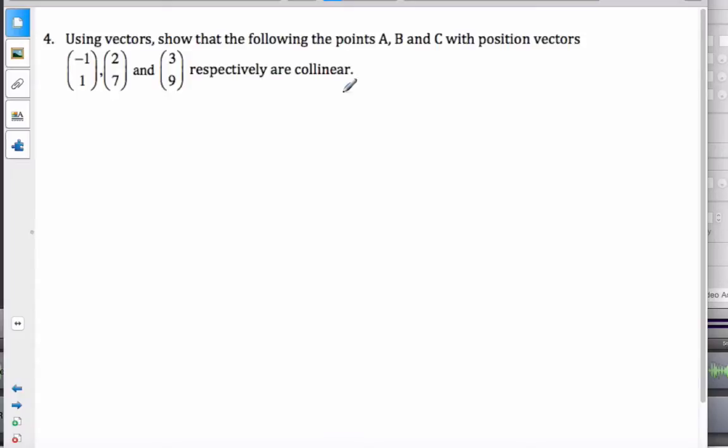Okay, welcome back. In this problem, we want to use vectors and show that those points are collinear. Just making sure collinear means that they're all in the same line. So it would be A, B, and C. These would be my points.